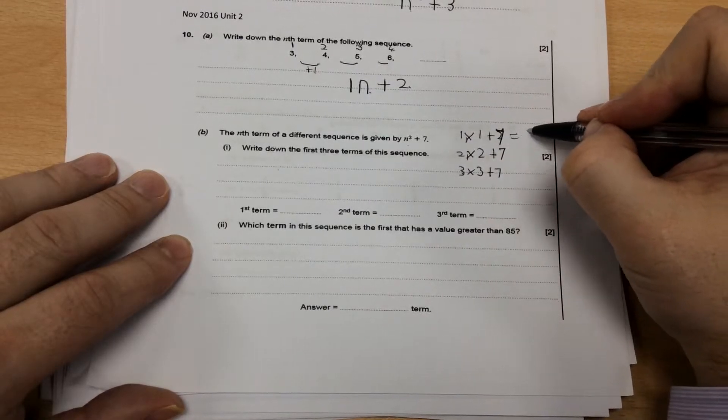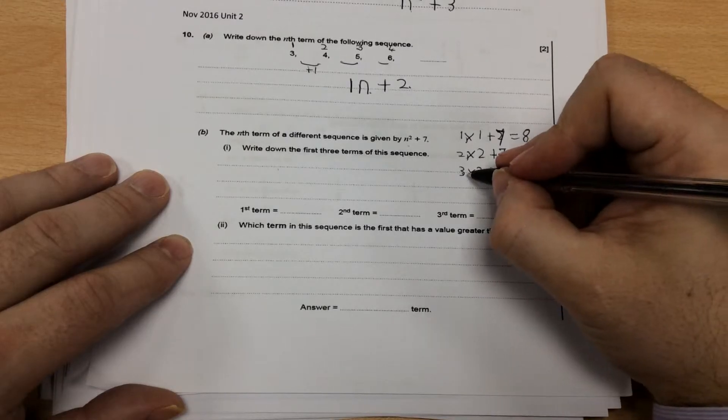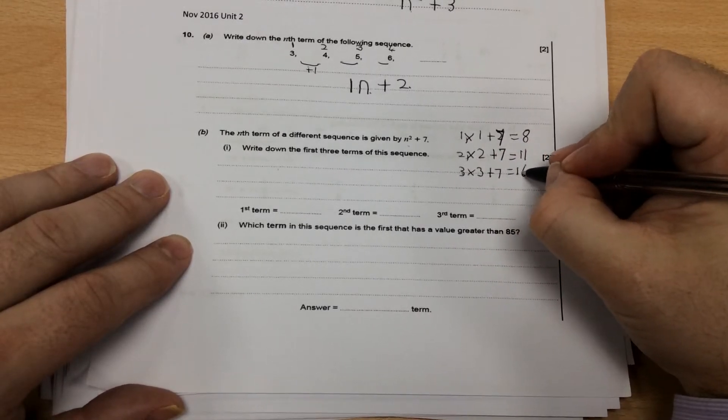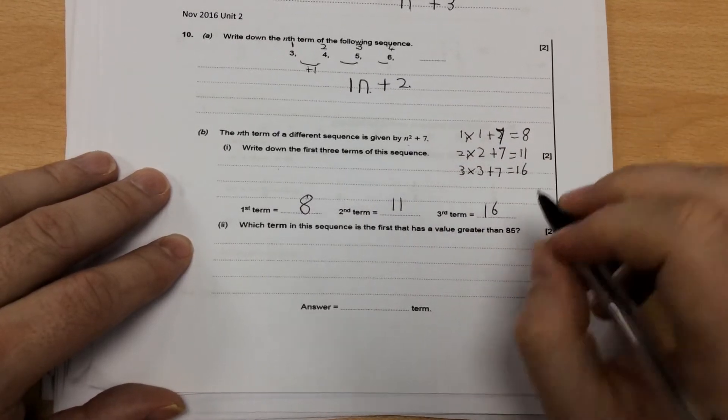One times one is one, add seven is eight. Two twos are four, add seven is eleven. Three threes are nine, add seven is sixteen. So the answer to that is eight, eleven, and sixteen.